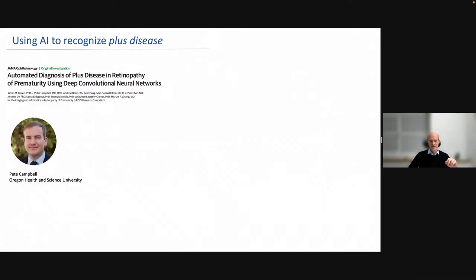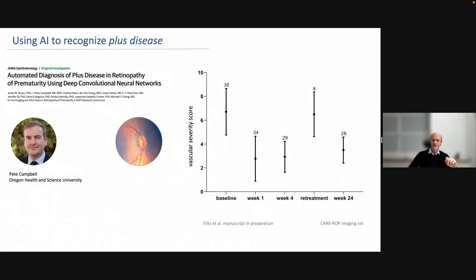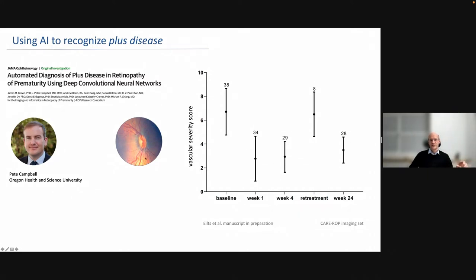To do so, we joined forces with a team from Pete Campbell, who had already developed a good algorithm looking at ROP images and vascular severity in primary ROP screening. We applied his method to our CARE imaging set from a clinical trial. Very interestingly, we can use his vascular severity score to show how, after baseline and treatment, ROP severity goes down at weeks one and four, and then identify those eight eyes in our study that had a reactivation requiring retreatment. AI-based algorithms are very good at picking up such vascular changes and showing us when retreatment is needed.